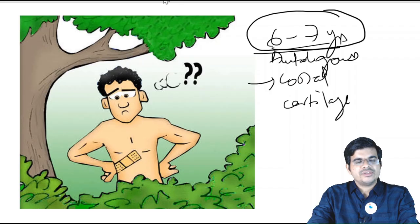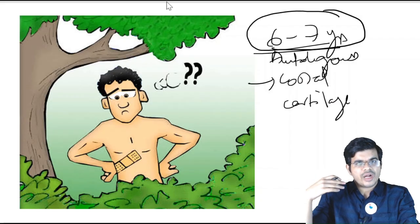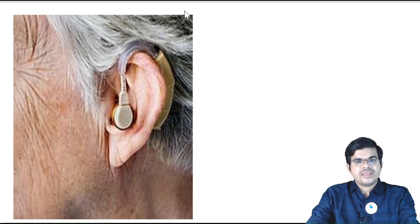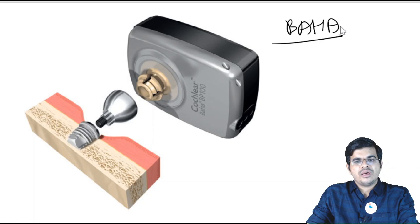Until then, the child may not be able to hear properly because of microtia and absence of the external auditory canal, resulting in severe conductive hearing loss. You can't use a regular hearing aid because there is no pinna or external auditory canal. So in that case, you anchor the hearing aid into the bone — that is known as bone-anchored hearing aid, or BAHA. One of the indications of BAHA is congenital ear anomalies.